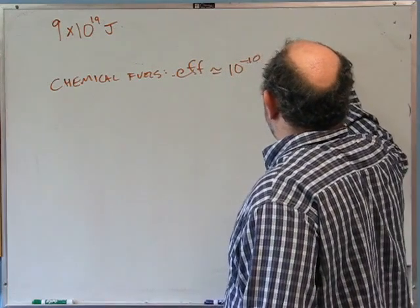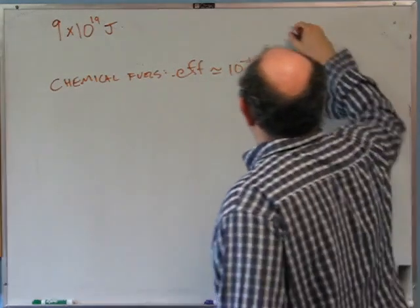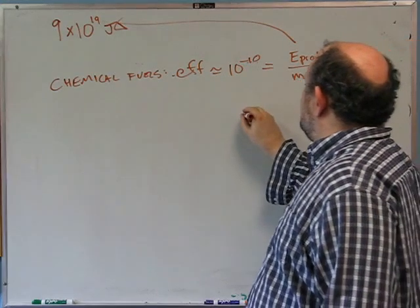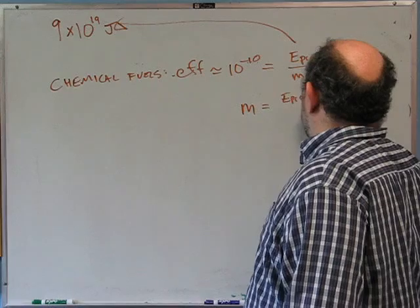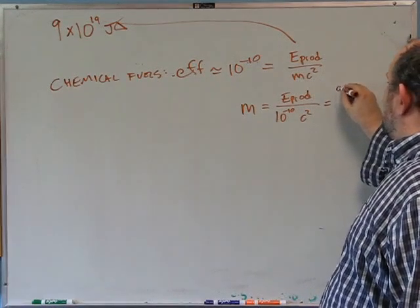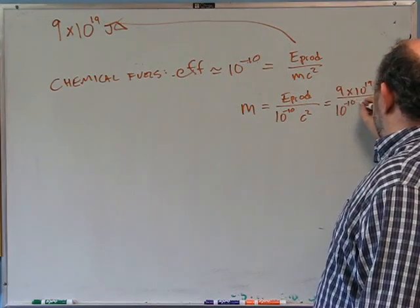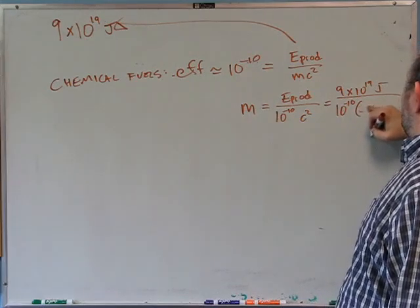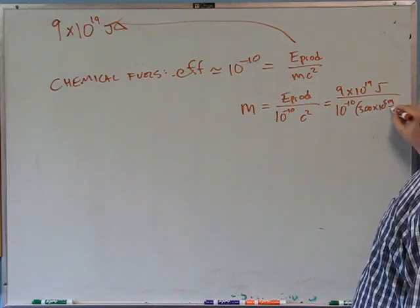Efficiency = E_produced ÷ (mc²). We want to find m, so: mass = E_produced ÷ (10⁻¹⁰ × c²) = 9×10¹⁹ J ÷ (10⁻¹⁰ × 9×10¹⁶ m²/s²). The 9s cancel, and 10¹⁹ ÷ (10⁻¹⁰ × 10¹⁶) = 10¹⁹ ÷ 10⁶ = 10¹³ kilograms.